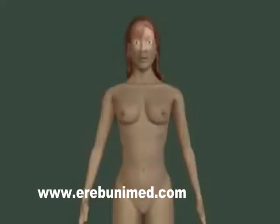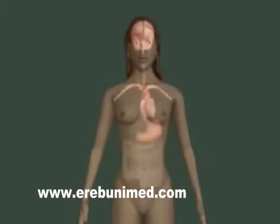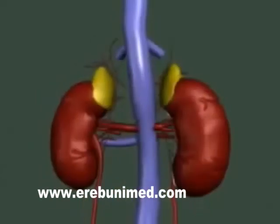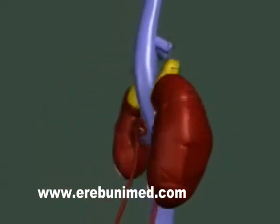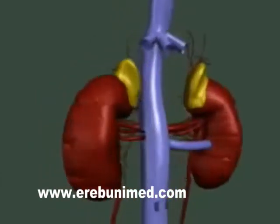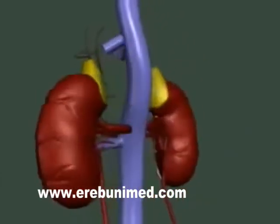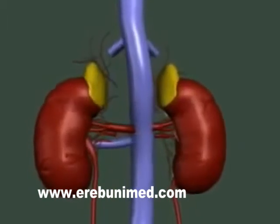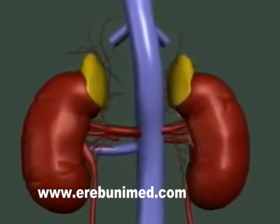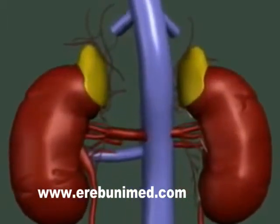Adrenal glands are the triangle-shaped endocrine glands that sit on top of the kidneys. They are responsible for secreting a variety of hormones that control the body's vital functions. One of the most important functions is to control the stress response through the synthesis of corticosteroids.